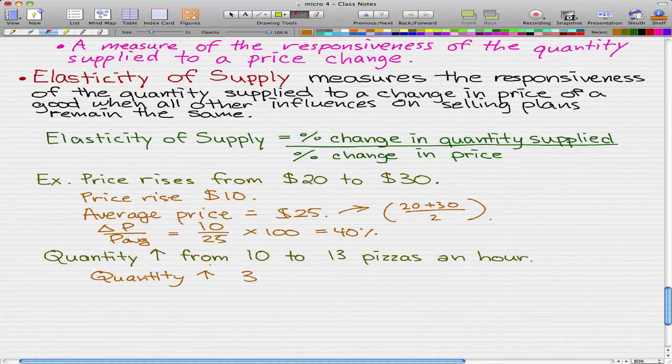From 10 to 13 pizzas, that's 3 pizzas. And the average quantity is 11.5 pizzas an hour.